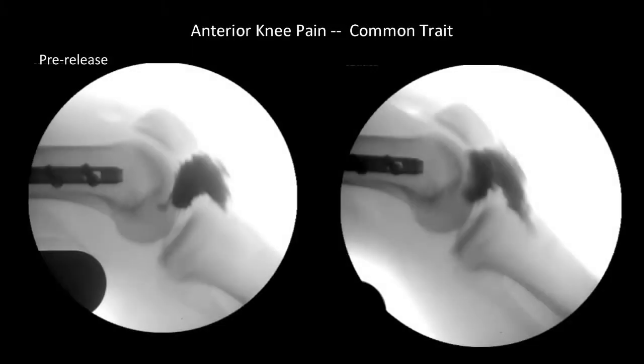The kinematics were shown in volunteers. We injected the fat pad and infrapatellar plica, or IPP, with contrast, filling the anterior compartment. Collectively, these tissues act as a deformable shock absorber.